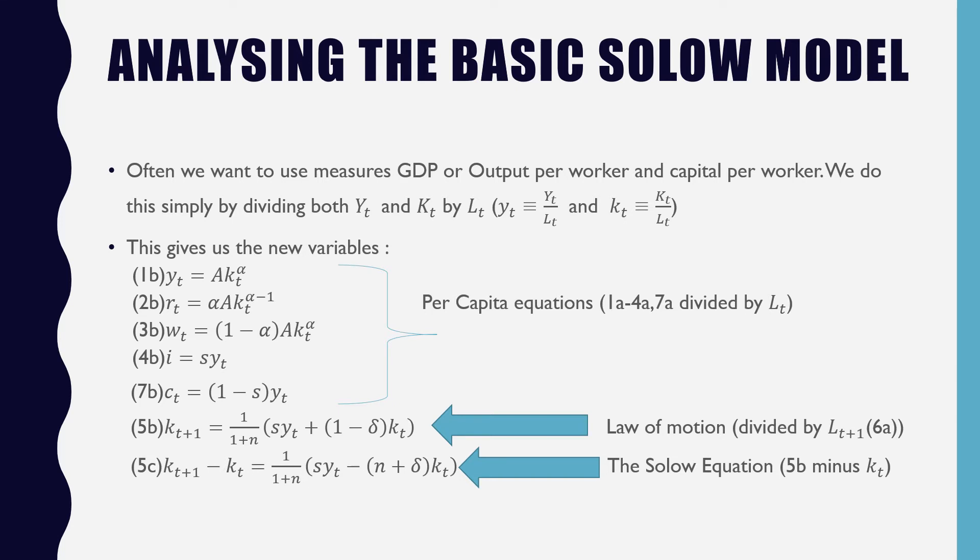If we subtract K_T from both sides of this equation, we only get 5C, which is what we would call our Solow equation.